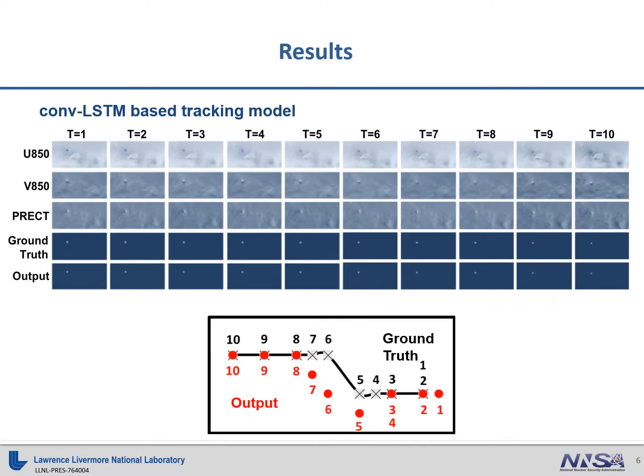This is the result of ConvLSTM tracking model. The top three rows represent input of our model for different climate variables, and the bottom two rows are time-series ground truth and output of the heat map. We can see that our model gives us trajectory which has strong agreement with the ground truth.